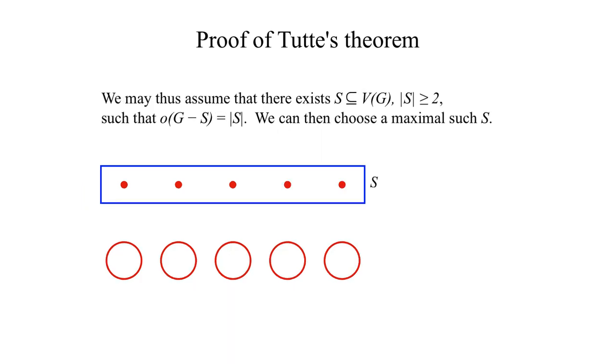We may thus assume that there exists a subset S of at least 2 vertices, such that the number of odd components of G minus S equals the cardinality of S. We can then choose a maximal such S.